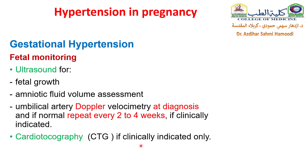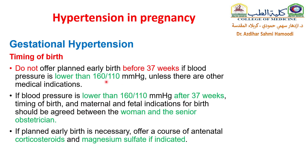Timing of birth: do not offer planned early birth before 37 weeks if blood pressure is lower than 160/110, unless there are other medical indications. If blood pressure is lower than 160/110 after 37 weeks, timing of birth and maternal and fetal indications should be agreed between the patient and her doctor. If planned early birth is necessary, offer a course of antenatal corticosteroids for lung maturity and magnesium sulfate if indicated.